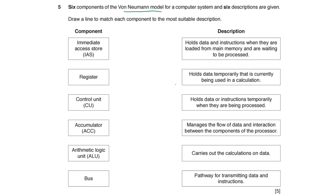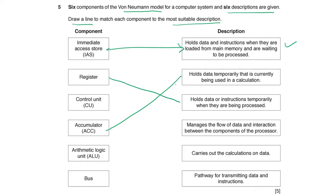Six components of the von Neumann model are given — draw a line to match each component to its description. Holds data and instructions when loaded from main memory and waiting to be processed — IAS (immediate access store). Holds data temporarily that is currently being used in a calculation — accumulator register. Holds data or instructions temporarily when being processed — register. Manages the flow of data and instructions between components of the processor — control unit. Carries out calculations on the data — ALU (arithmetic logic unit). Pathway for transmitting data and instructions — bus.